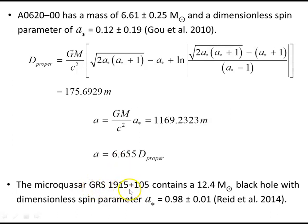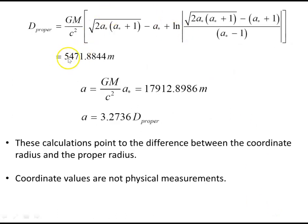The microquasar GRS1915+105 contains a 12.4 solar mass black hole with a dimensionless spin parameter a* = 0.98, according to Reid and others. Using those values, its proper radius is 5,471.88 meters and its coordinate radius is 17,912.90 meters — the coordinate radius is 3.27 times its proper radius. These calculations clearly point to the difference between the coordinate radius and the proper radius. Coordinate values are not physical measurements — they are used to calculate with, not the same as physical measurements. Metrical quantities, such as those derived from the metric, agree with measurement. Coordinate values do not.